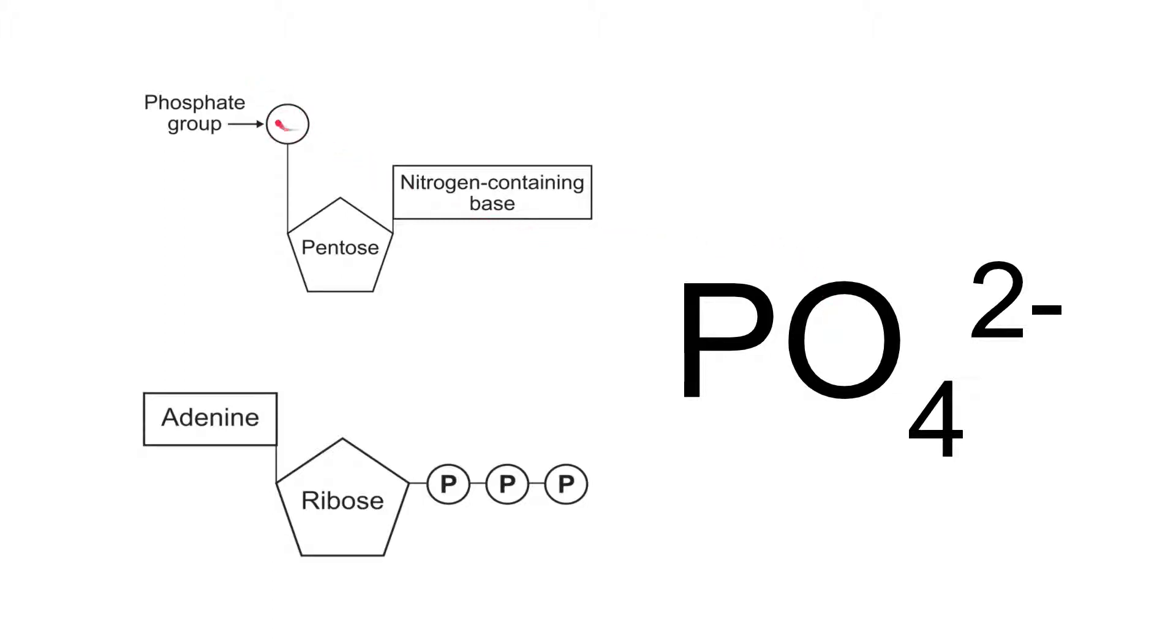The first is as a phosphate group in a nucleotide, so either a DNA or RNA nucleotide. The second is in a molecule of ATP, where three phosphate groups are bonded to a ribose sugar, which is also bonded to an adenine base. So two different forms of nucleotide there, either in the DNA and RNA structural nucleotides or in the RNA derivative nucleotide of ATP.